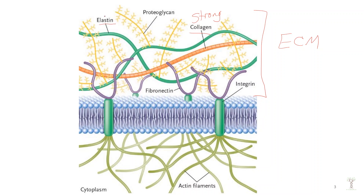Elastin is a protein that makes tissues stretchy. Think of a rubber band: when you stretch it and let go, it returns to its normal position — that's elastin. We have elastin in tissues that need to be stretchy, such as our skin, our bladder, our lungs, and blood vessels that need to dilate and constrict, which would have higher amounts of elastin.